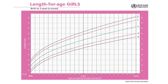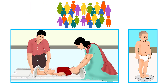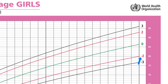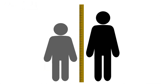In growth charts, children's measurements are converted into Z-scores. The mean, or 0 Z-score, represents the average height or weight of a child and is shown by a green-colored curved line. There are 4 curved colored lines on growth charts showing selected Z-scores: minus 3, minus 2, 2, and 3. Minus 2 and 2 Z-scores are shown by red colored lines, and minus 3 and 3 Z-scores are shown by black colored lines. These Z-scores help us identify growth problems in a child.